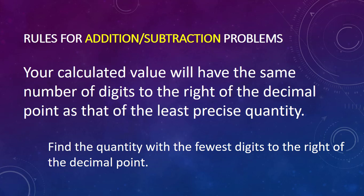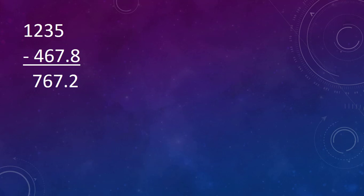You are probably aware that when you punch numbers into a calculator, it will spit out a number with a lot of digits. When we record a calculation, we want it to reflect the precision with which we have measured our data — we don't want our answers to be more precise than our measurements. When we add or subtract measurements, the calculated answer will be rounded to the same number of digits to the right of the decimal point as that of the least precise quantity. So take 1235 and subtract 467.8 — your calculator gives 767.2. Since 1235 has the least number of decimal places at none, we round our answer to 767.